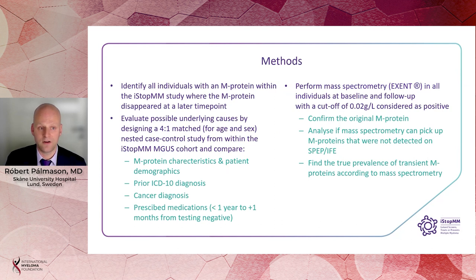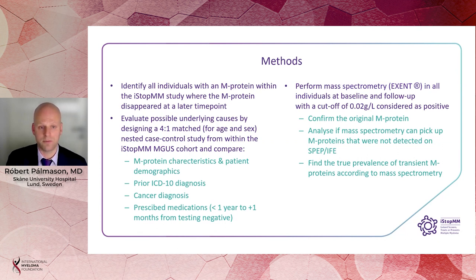We identified all individuals with an M protein within the iSTOP-MM study where the M protein disappeared at a later time point. We evaluated possible underlying causes by designing a 4-to-1 matched nested case-control study from within the iSTOP-MM MGUS cohort and compared M protein characteristics and patient demographics, prior diagnosis and cancer diagnosis, and prescribed medication from less than one year to one month after the subject tested negative. We performed mass spectrometry in all individuals at baseline and at follow-up with a cutoff of 0.02 grams per liter considered as positive — to confirm the original M protein, analyze if mass spectrometry can pick up M proteins not detected on SPEP or IFE, and find the true prevalence of transient M proteins according to mass spectrometry.